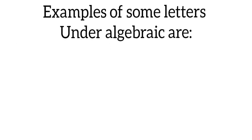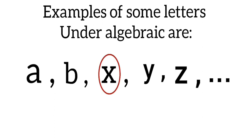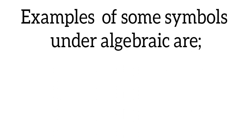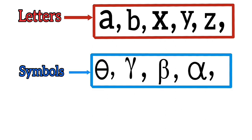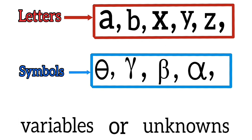Examples of letters used in algebraic expressions include a, b, x, y, z, and so on. X and y are very popular because of the x and y axes on graphs. Examples of symbols include theta, alpha, beta, gamma, and so on. All these letters and symbols are called variables or unknowns in algebra.